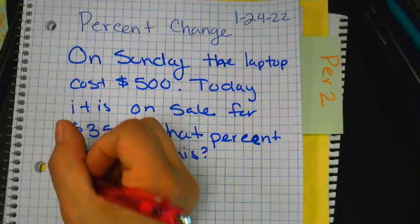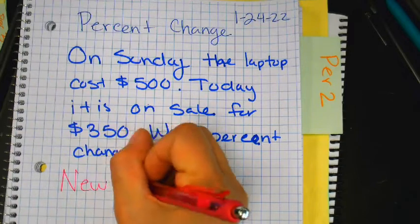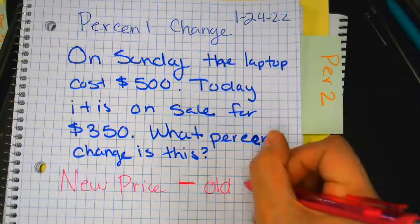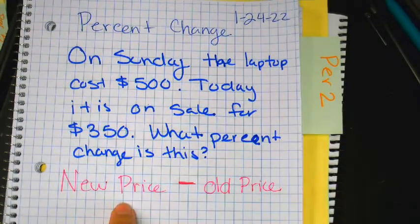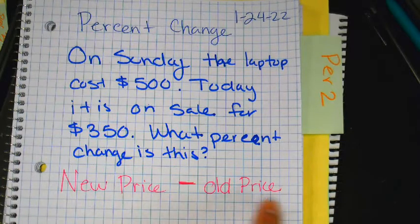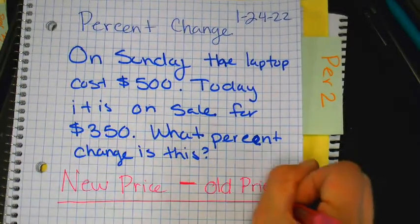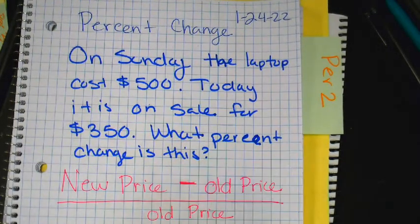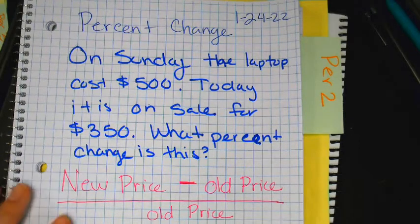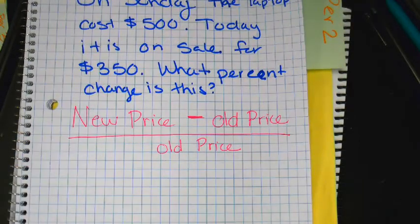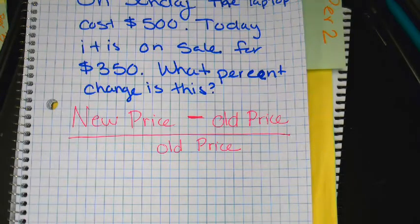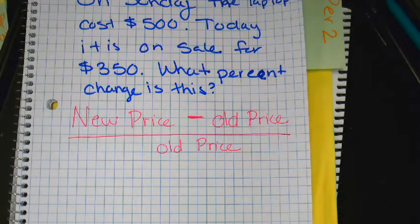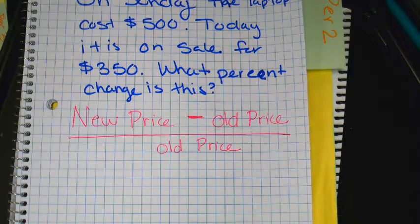In this problem, we're going to do new price minus old price divided by old price. So your new price minus your old price divided by your old price. So this is the formula that we're going to be using today. We're going to figure out what's the new price, what's the old price divided by old.